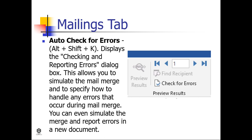Auto Check for Errors (Alt+Shift key) displays the Checking and Reporting Errors dialog box. This allows you to simulate the mail merge and specify how to handle any errors that occur. You can simulate the merge and report errors in a new document.